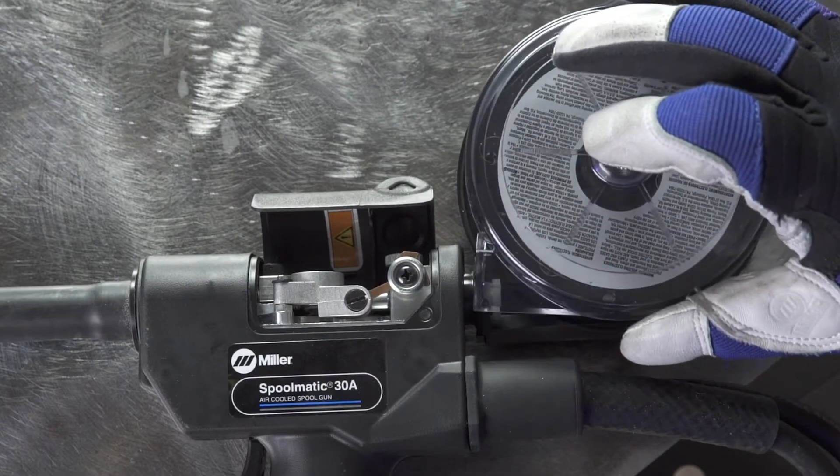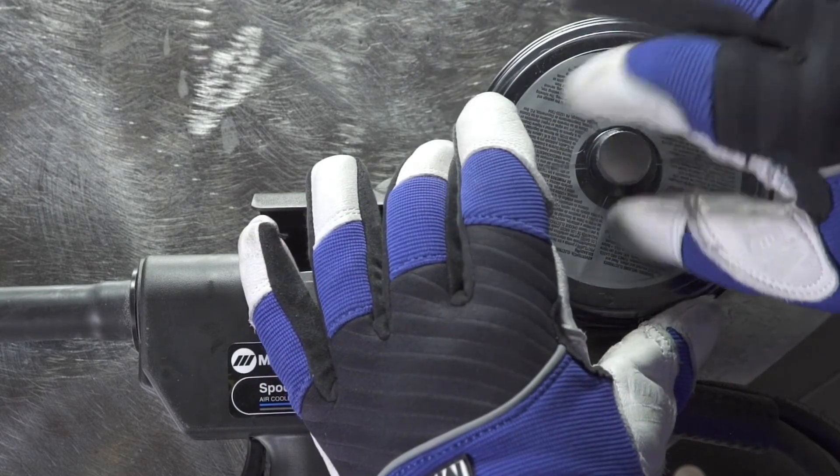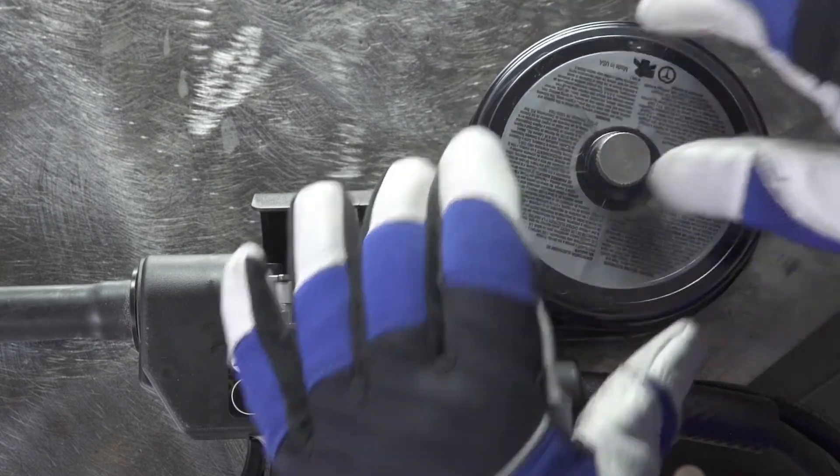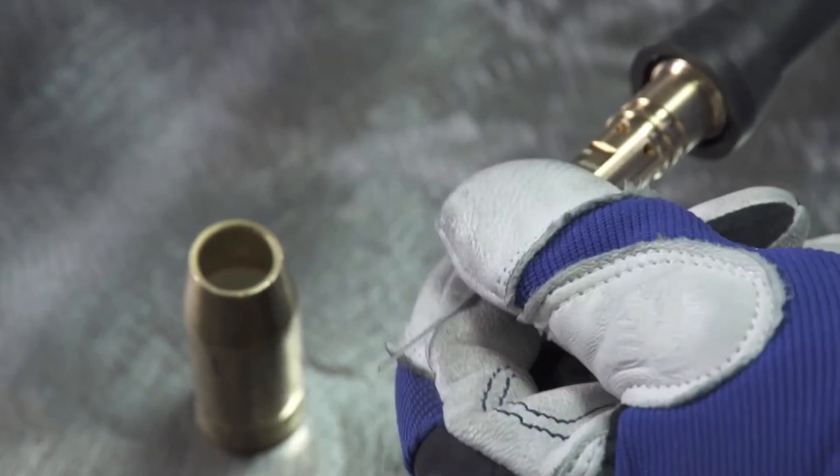Replace the spool gun cover and remember to select the contact tip that matches your wire diameter. Reinstall the proper contact tip and nozzle.